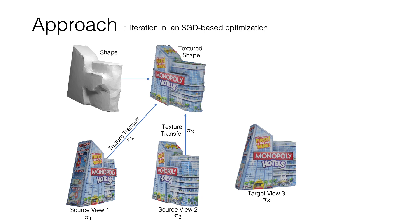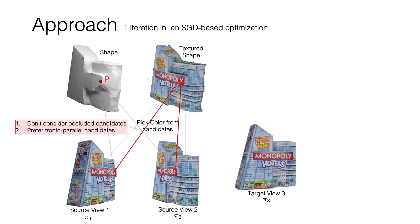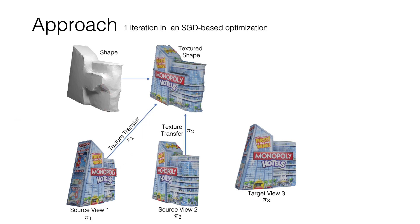We first texture the entire surface of the shape using the two source views. To texture a point P on the surface of the mesh, we project it down to the two source views using their camera pose estimates. The colors at these projections are candidates for coloring point P, and we color P as a weighted sum of the candidate colors. We take care of two aspects while choosing these weights: first, do not use candidates from which point P is occluded; and second, we prefer frontoparallel candidates that look onto point P head-on. Note that all steps of this texturing process are differentiable.